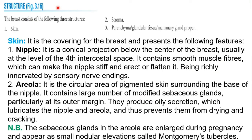The structure of the breast: the breast consists of skin, stroma — which is connective tissue — and the parenchyma, which forms the mass of the gland and includes the internal structure. The skin shows the nipple and areola. You should know the level of the nipple, which is at the fourth intercostal space. This is very important.